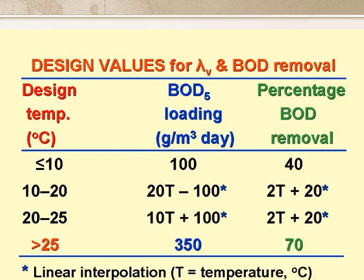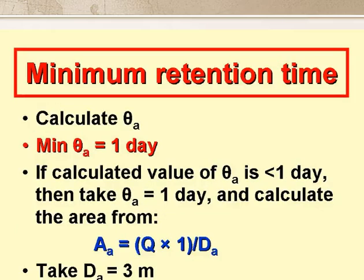The BOD removals that we assume in our design are 40% at 10 degrees and below, 50% at 15 degrees, 60% at 20 degrees, and 70% at 25 degrees, again with linear interpolation in between. We must remember that the minimum retention time in an anaerobic pond is one day. So if our calculated value of theta a is less than one day, we have to use a value of one day and recalculate the area, as shown on the slide, assuming a depth of three metres.